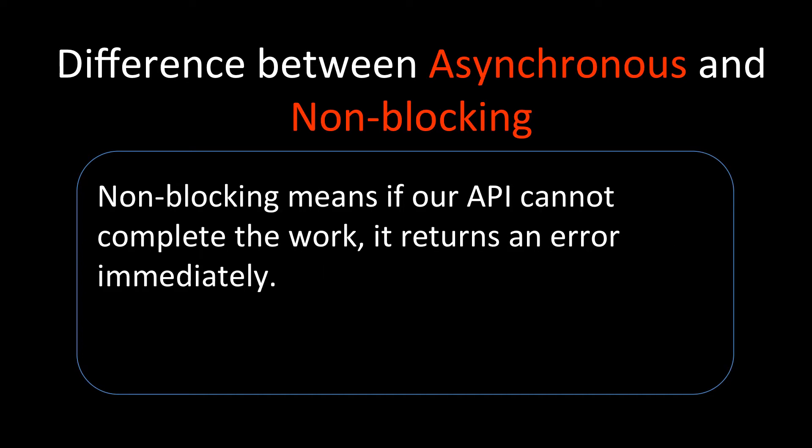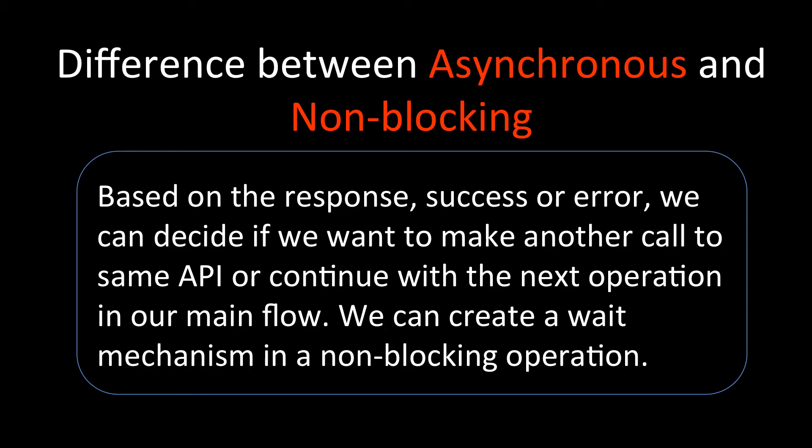Whereas in non-blocking, if our API cannot complete the work, it can return an error immediately. Non-blocking means if the API is not able to finish the work, it will first try to finish the work. If it cannot, then it will report the error immediately. Based on the response — success or error — we can decide whether to make another call to the same API or continue with the next operation.